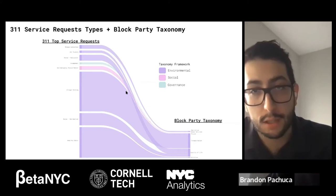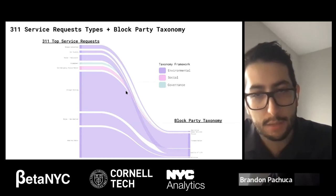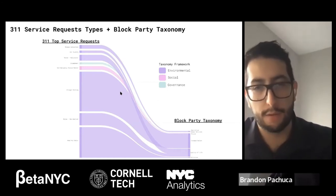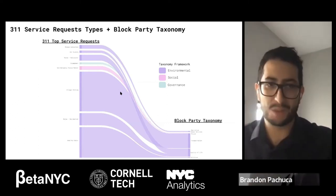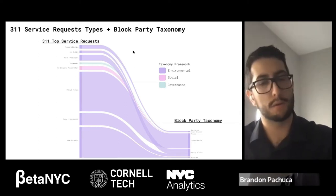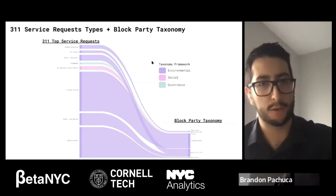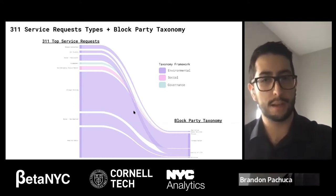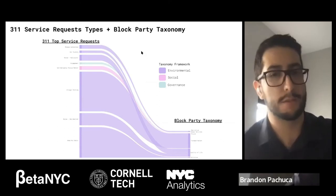On the question of axes on the visualization: these are frequency counts. The left-hand side is weighted by the total complaint types divided by the total amount of complaints for that community board. The right-hand side for the BlockParty taxonomy is the number of mentions divided by the total number of mentions or total topics being discussed in that community board or for that particular transcript. So the weighting is relative to themselves — total counts per community board per transcript or per 311 service complaint.